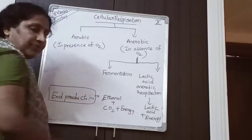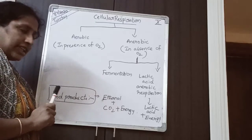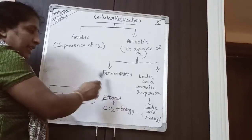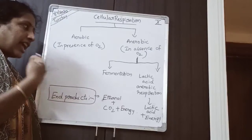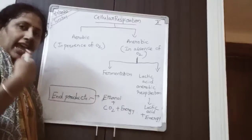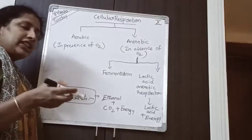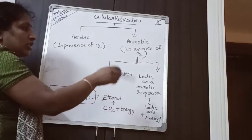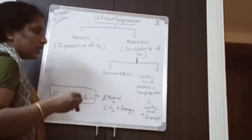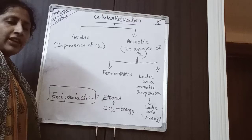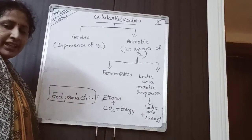What is fermentation? Fermentation we have seen in yeast. Yeast is a unicellular fungi — in that fermentation occurs. And lactic acid anaerobic respiration occurs in some bacteria like Lactobacillus, which is present in curd and even in human muscle cells. In the absence of oxygen, yeast carries fermentation, and during vigorous exercise, human muscle cells carry lactic acid anaerobic respiration.